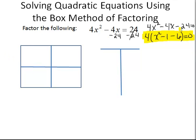Now, I have the following. I'll write the first term in the very first box, which is x squared. And the last term in the last box, which is minus 6.